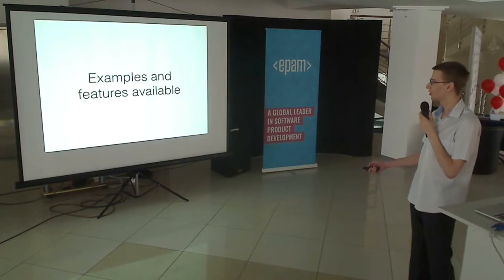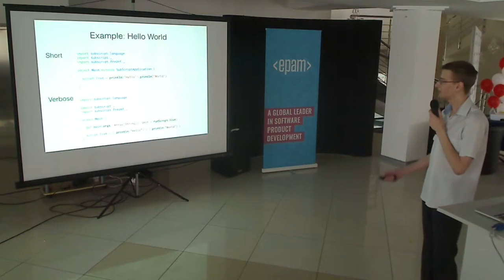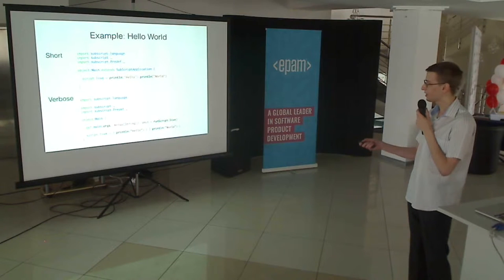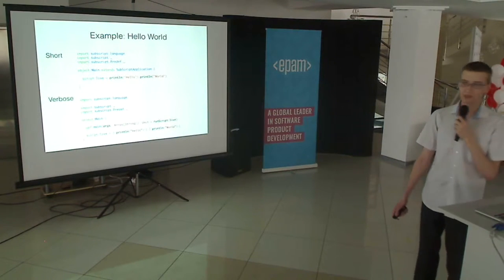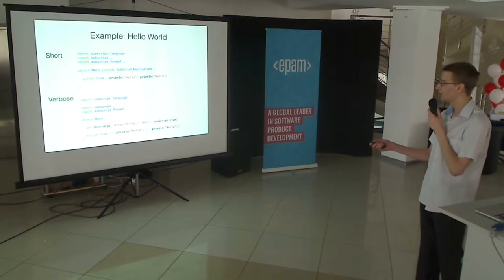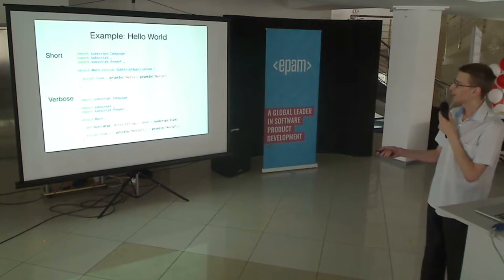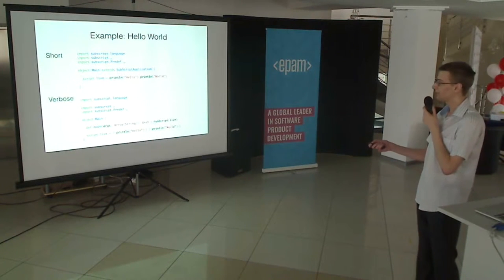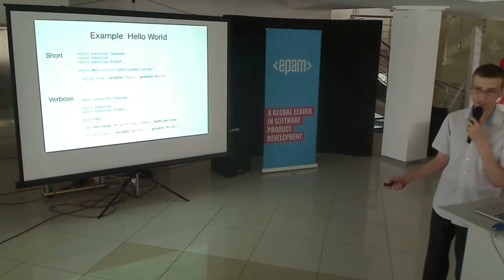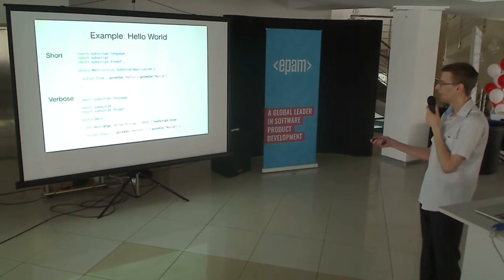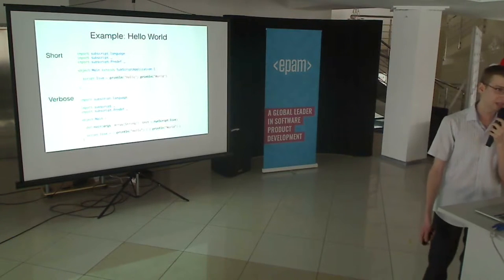Let's see what it can do with an example. Here is an obligatory Hello World example. I have included a short and verbose version. Both versions have three imports at the top that activate SubScript — by default our extension is deactivated for each source file. In the short version we use the SubScript application trait to invoke the lib script as if it were the main method of an application. A script is a specification of a process, and this script's body consists of two operands glued together by a space.